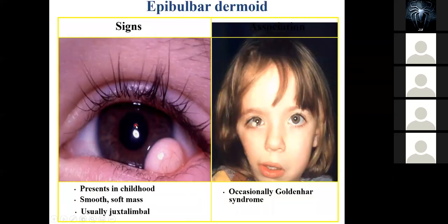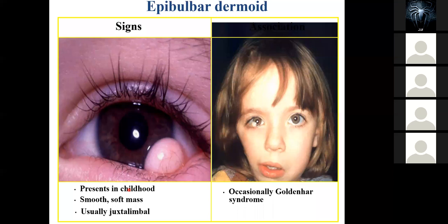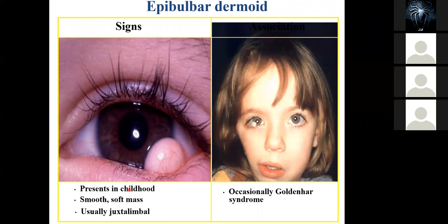An epibulbar dermoid presents as a smooth, small, well-defined soft mass on the anterior aspect of the eye, on the bulbar conjunctiva. It is usually present in a child and is commonly known to be associated with what we call Goldenhar syndrome. You can see all these pictures — they could easily come in an exam for identification, and it wouldn't be troublesome for those who have been coming to class.